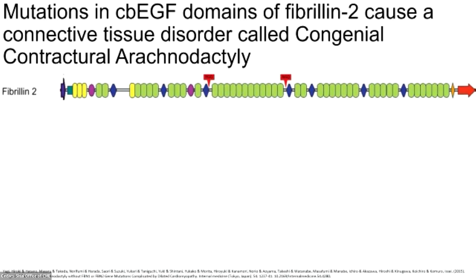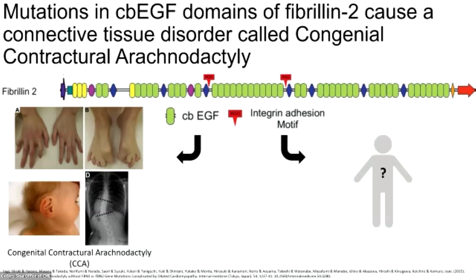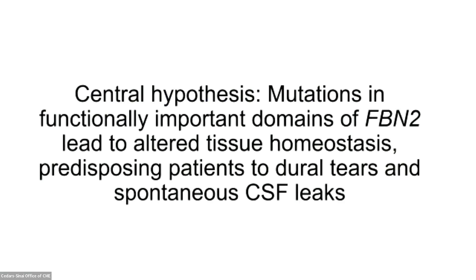When we look at fibrillin 2, we know that mutations in calcium-binding EGF domains cause congenital contractural arachnodactyly, where patients have contractures of the hands and feet, crumpled ears, and scoliosis. This begs the question of what phenotype would result from disruption of integrin binding to fibrillin 2. We think it's plausible that mutations in and around the RGD domains of fibrillin 2 could have important clinical consequences you couldn't predict from CCA, and that consequence could potentially include spontaneous CSF leaks.